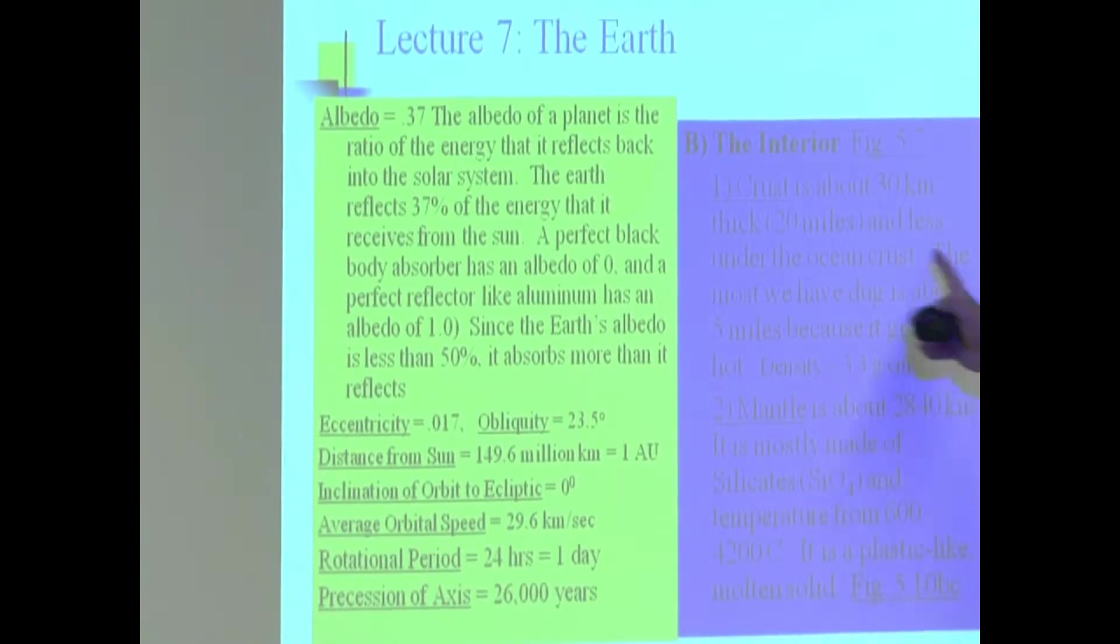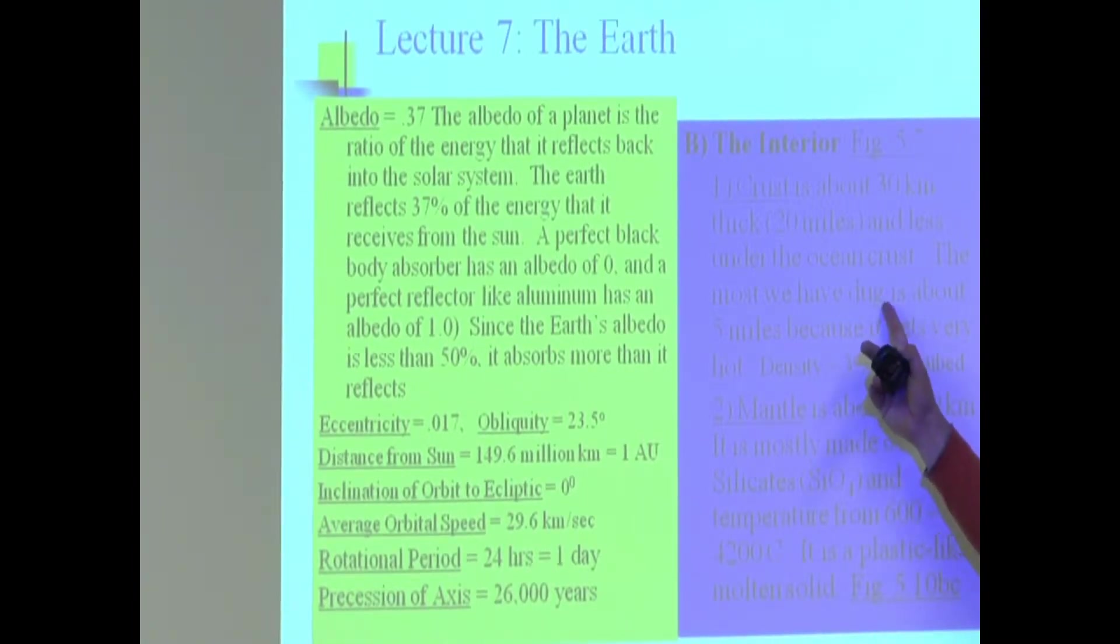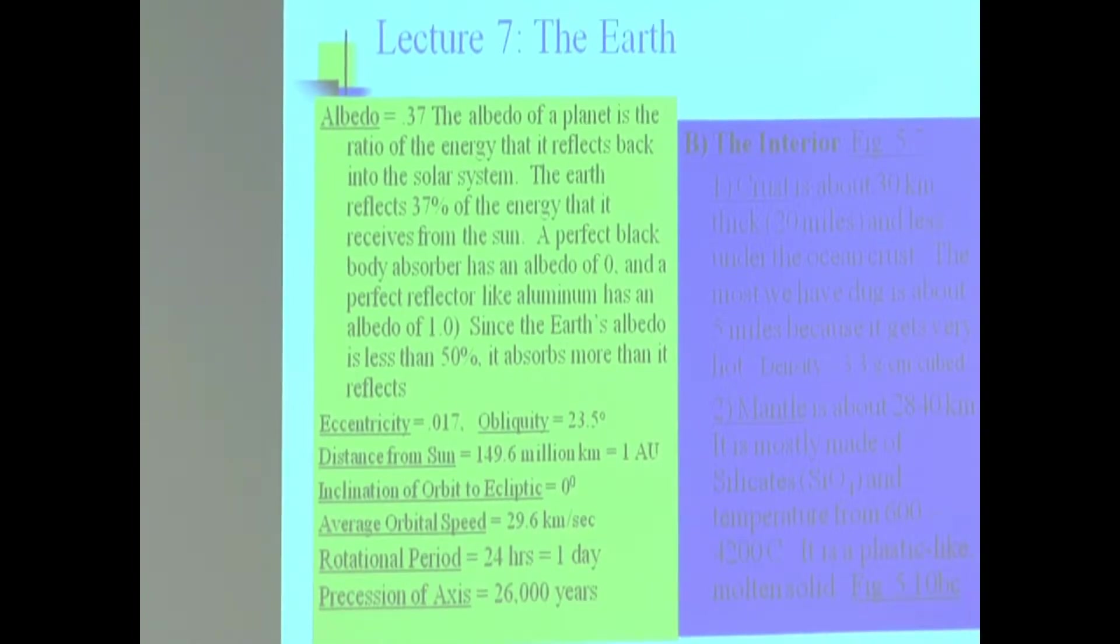Crust is about 30 kilometers thick and less thick under the ocean crust. The ocean crust is thinner than the continental crust. The most we have dug in the crust is roughly five miles. When we try to dig for oil and other stuff, we can't dig too much because our metals literally melt. It gets very hot as you go down.